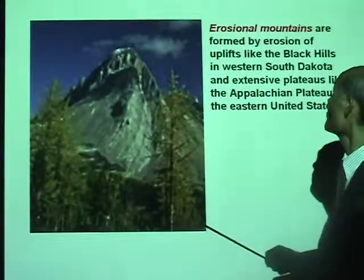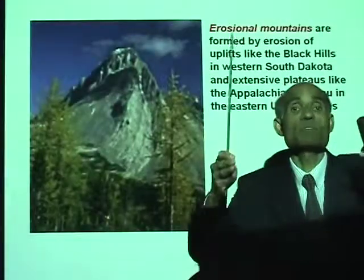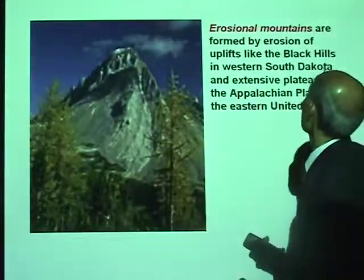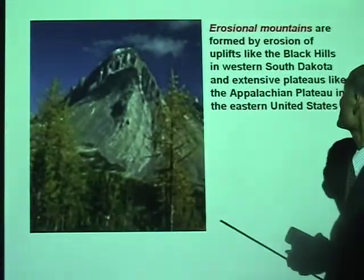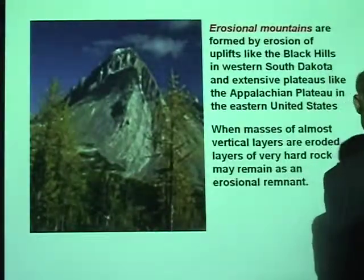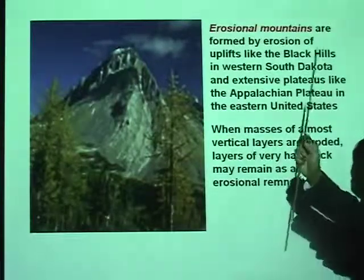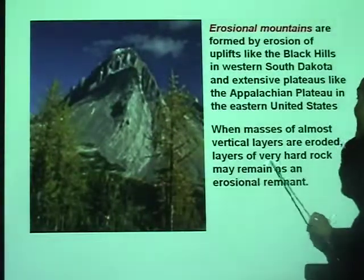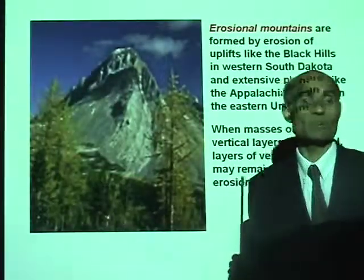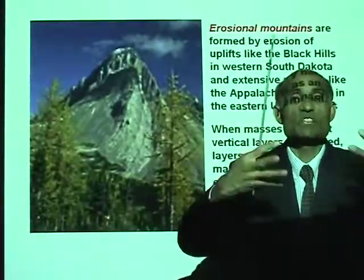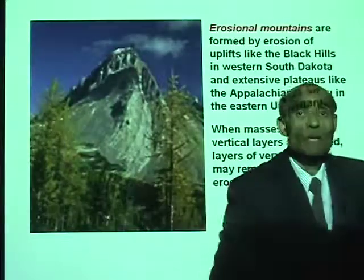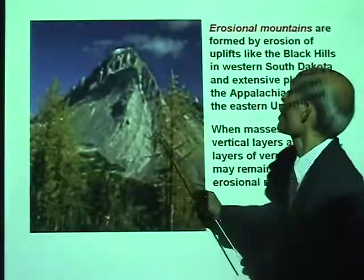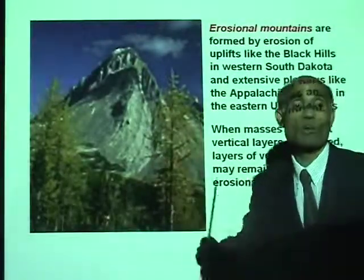Erosional mountains are formed by erosion of the uplift. The uplifted part of mountains is gradually fashioned by erosional forces, like the Black Hills in western South Dakota and extensive plateaus like the Appalachian Plateau in the eastern United States. When masses of almost vertical layers are eroded, layers of very hard rock may remain as an erosional remnant. Soft parts like soil are washed away by wind and rain, leaving a solid, dense rock layer behind — a good example of an erosional mountain.